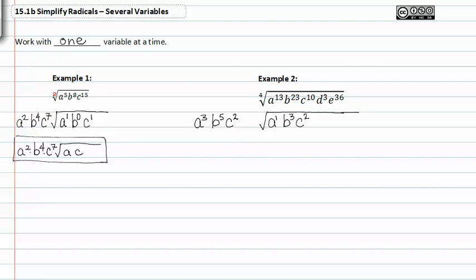Moving on to d, four will go into three zero times so our remainder is just three.